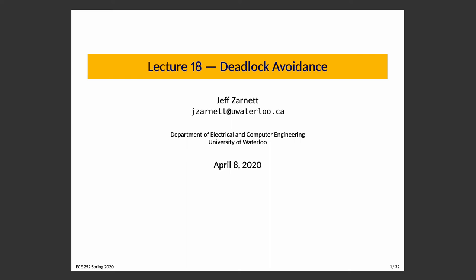Lecture 18: Deadlock Avoidance. In examining deadlock as a topic, we've introduced the informal definition and replaced it with a better, more formal definition. When we discussed the formal definition, we covered the idea of deadlock's constituent elements — the four things that make up deadlock: mutual exclusion, hold and wait, no preemption, and a cycle in the resource allocation graph.